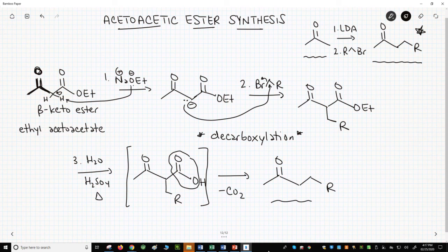So the Claisen condensation, which gives us access to beta-ketoesters, sets us up to alkylate ketones using simple reagents like sodium ethoxide. These reagents were accessible to chemists in the early 20th century and allowed them to make different alkylated ketones. Thank you.